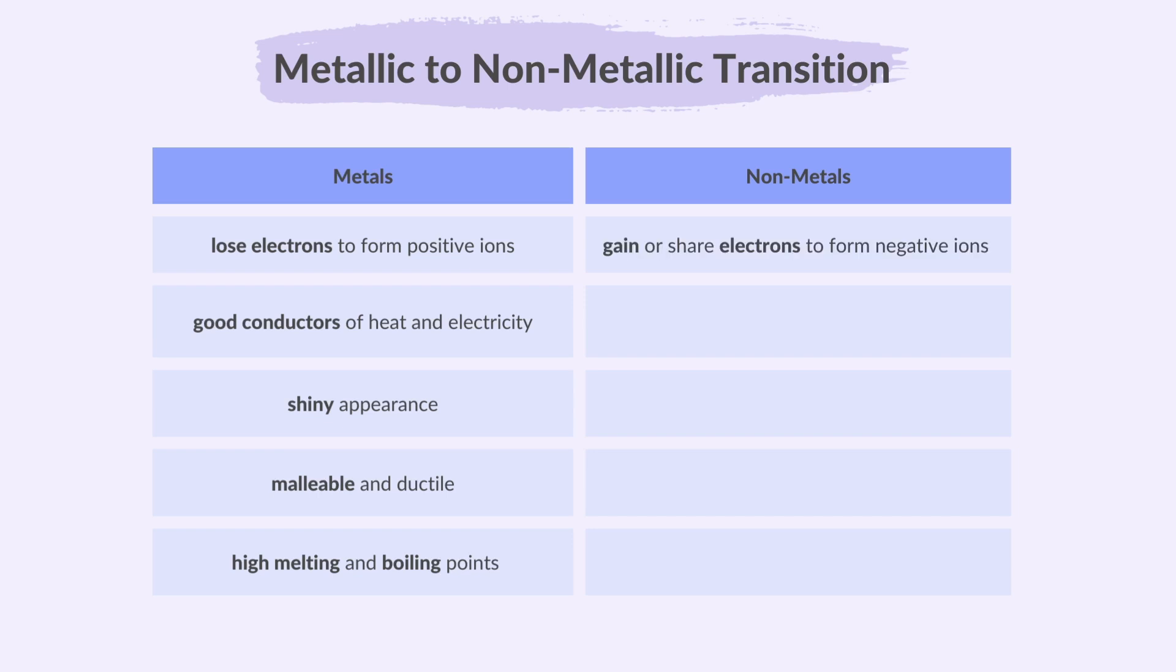Non-metals are elements that tend to gain or share electrons to form negative ions or covalent bonds in chemical reactions. Non-metals are typically poor conductors of heat and electricity. They have a dull appearance.